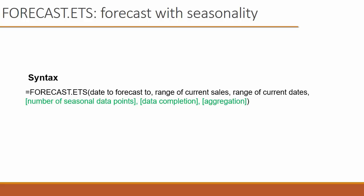Then we have three optional arguments. The first is how many seasonal data points we have. If you make that zero, Excel assumes no seasonality; if you leave it empty, Excel guesses — in our example the seasonality is 12 because we have a 12-month cycle. The second optional argument is data completion: if you don't have a sales value for a particular period, you can specify one (the default) to have Excel fill in the blank by averaging the previous and next values, or zero to treat missing values as actual zeros.